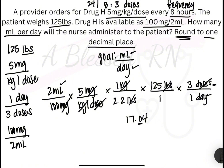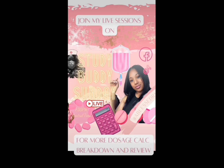And now we have to round. We're looking at the tenths place, so we go to the hundredths. Because this is 4 and below, that stays the same. So our answer is going to be 17 milliliters per day.